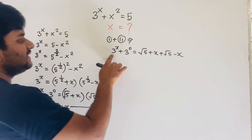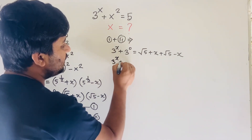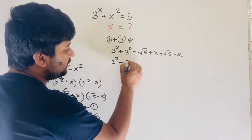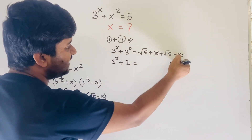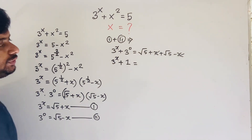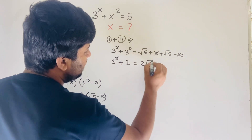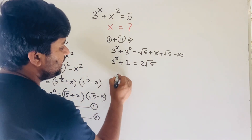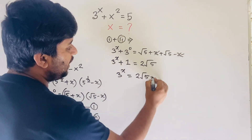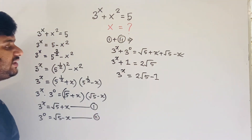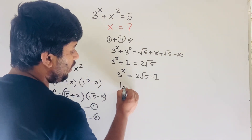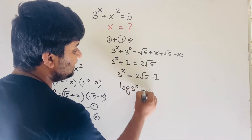We know that 3^0 = 1. Adding the two equations, the x terms cancel on the right side, giving us 3^x + 1 = 2√5. Therefore 3^x = 2√5 - 1, moving 1 to the right side.